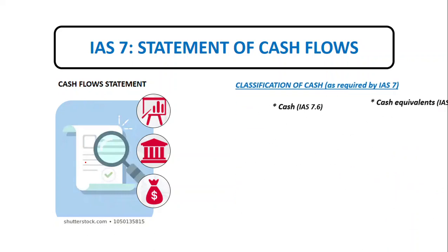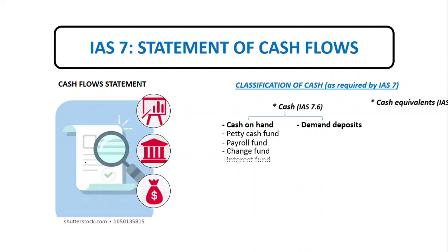Cash is composed of cash on hand and demand deposits. Cash on hand is cash readily available for disbursements or use in operations — examples include petty cash fund, payroll fund, change fund, and interest fund — these are coins and currencies on hand. Demand deposits are cash in bank that are withdrawable on demand without any penalties or surcharges. Examples of demand deposits are savings deposits, checking accounts, and current deposits.